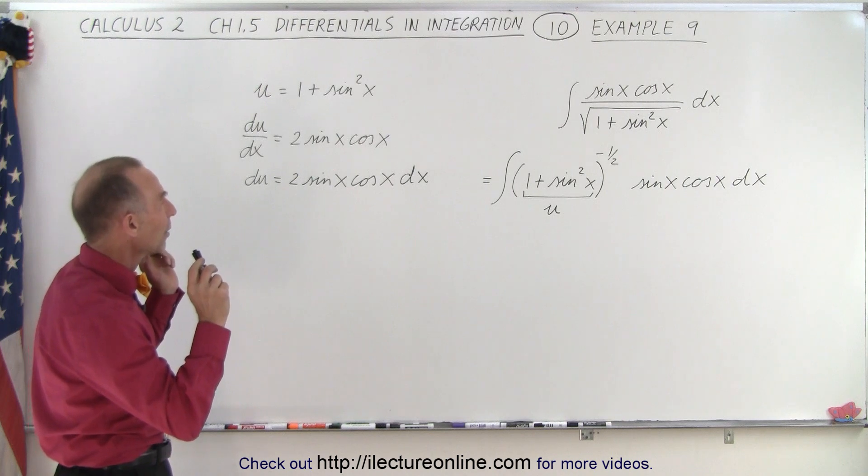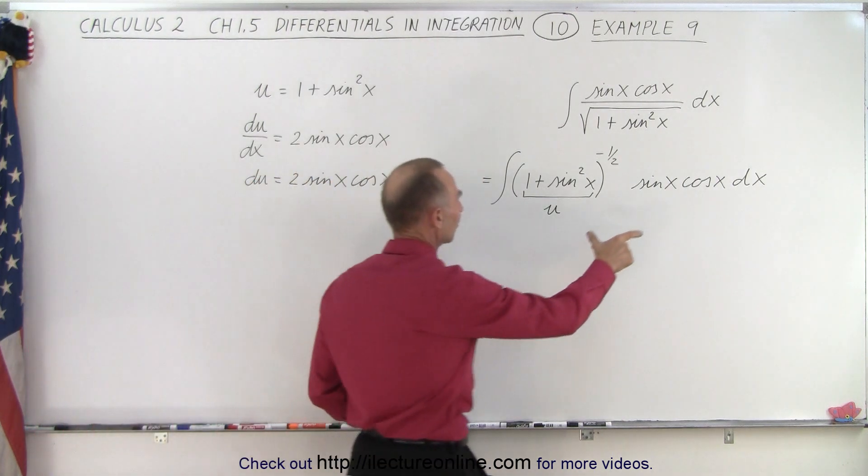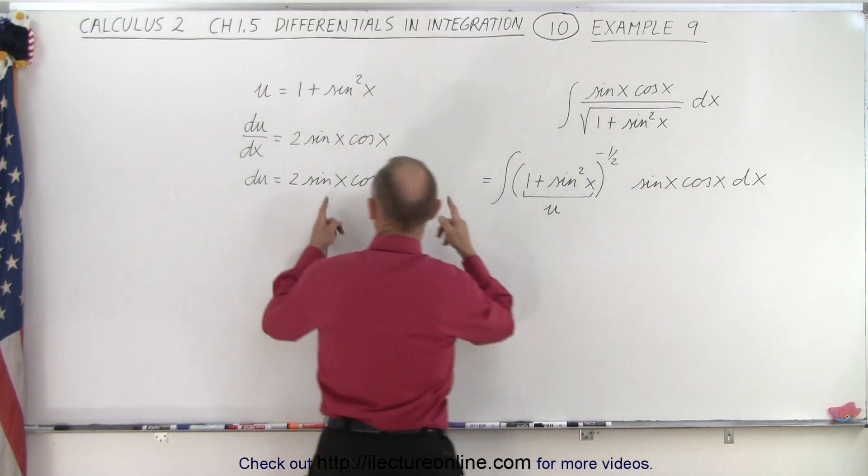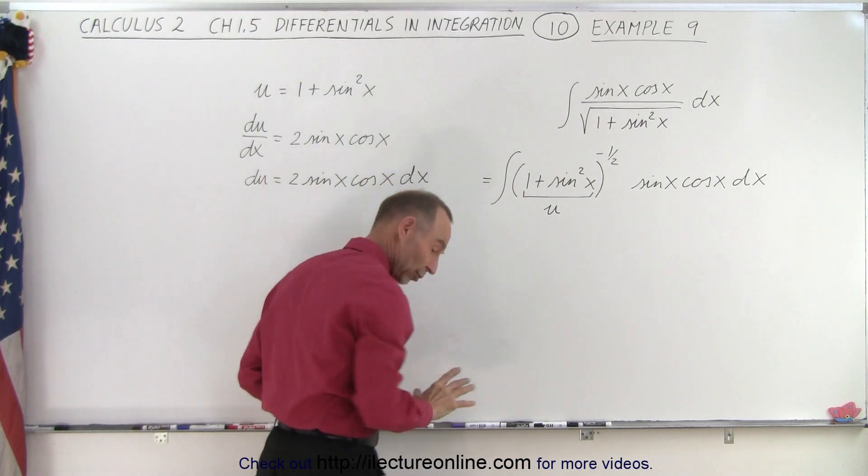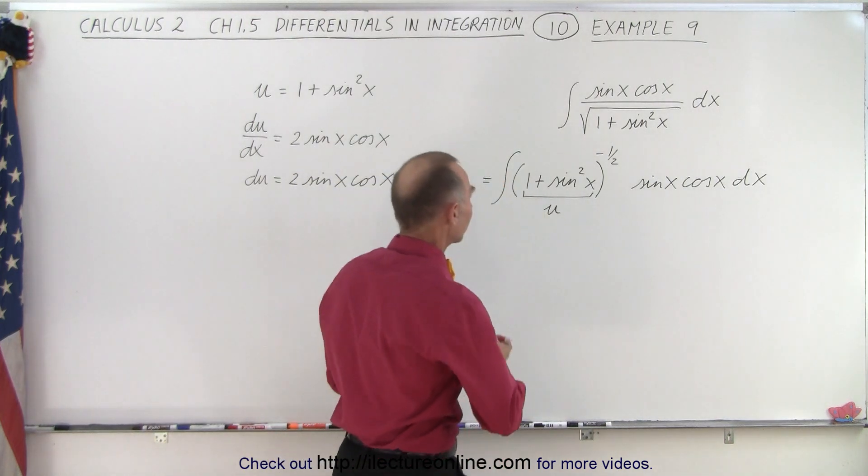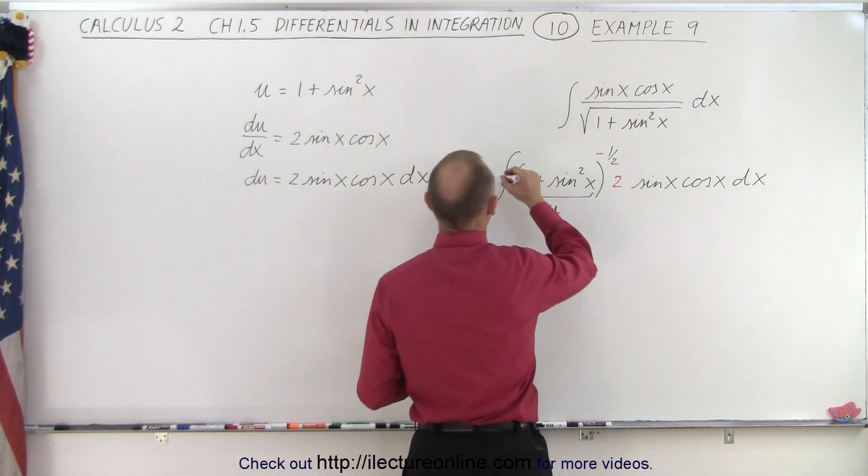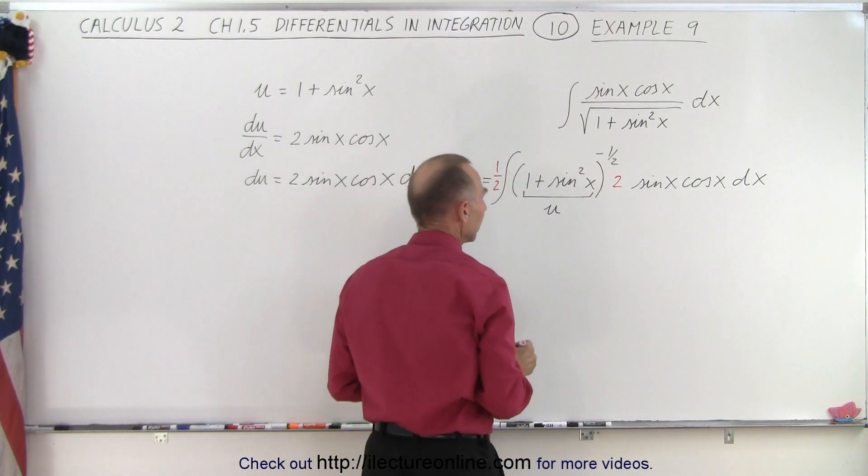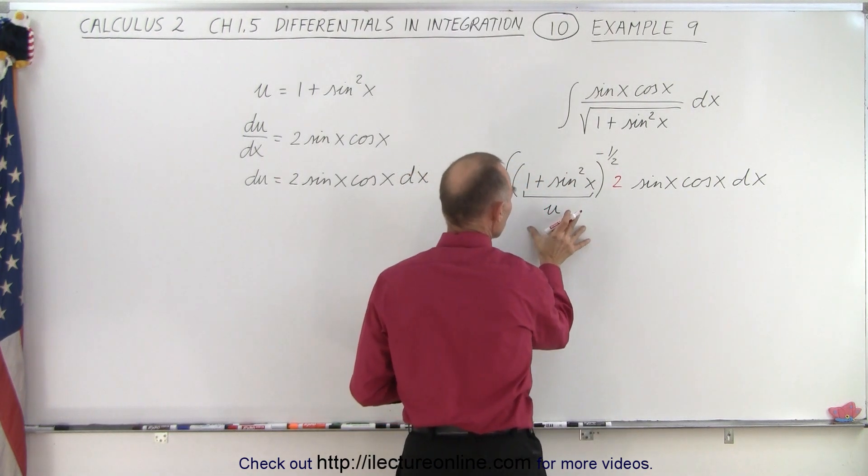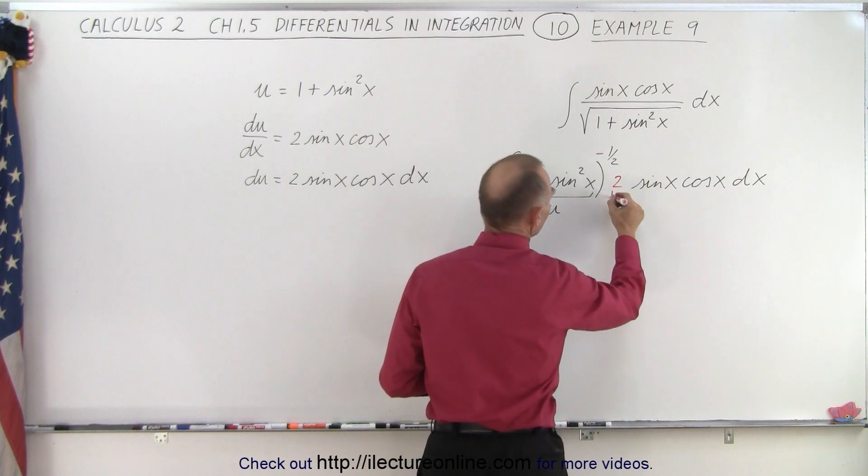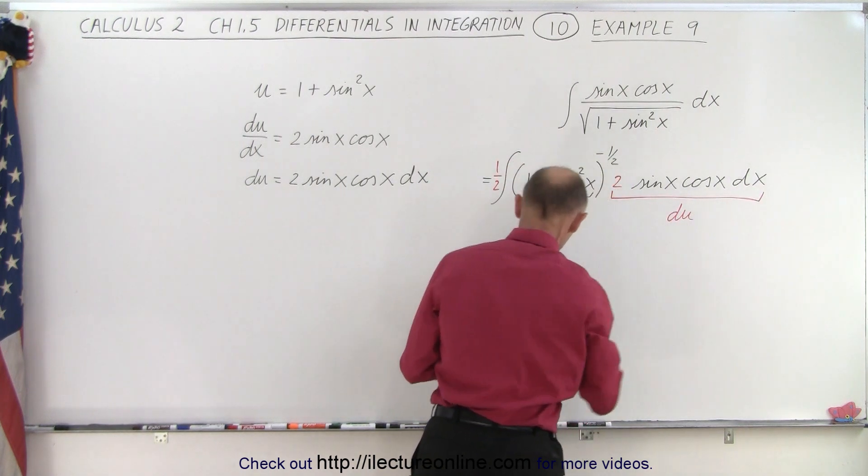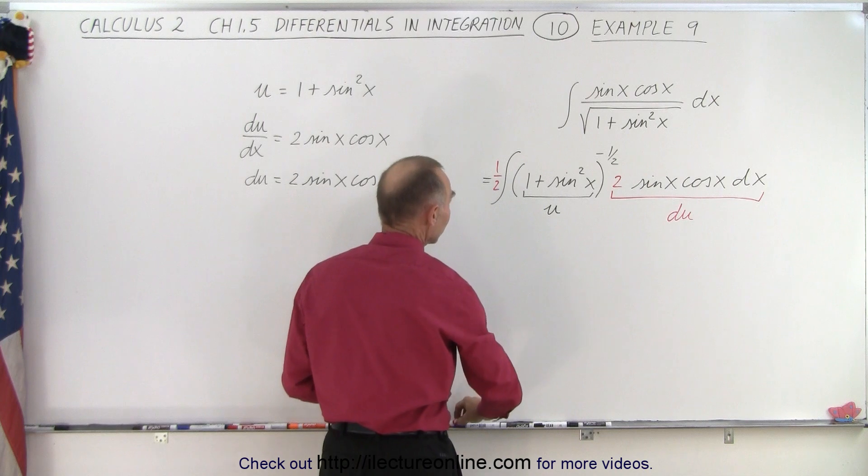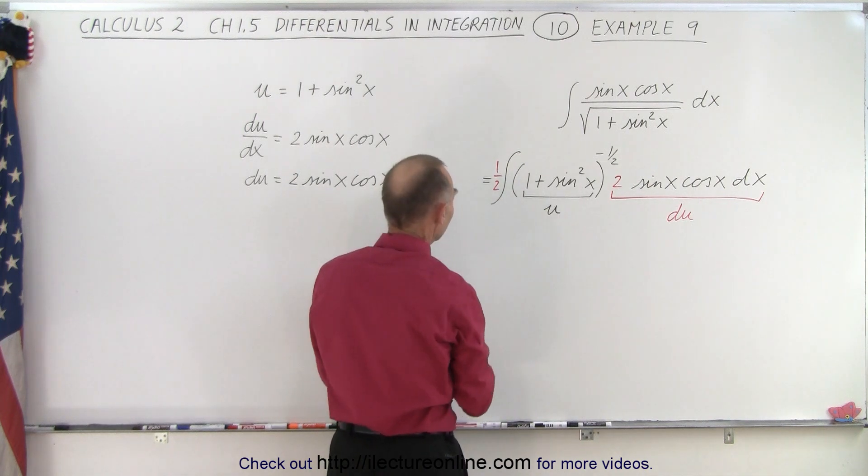Okay, and now what we realize here is that we have the sine of x cosine of x dx, but I don't have the 2, which means that I need to multiply this by 2, and of course also divide by 2. Now I have my u to the minus 1 half, and this here is my du, and so that will drop off when I integrate. So I'm simply going to integrate this.